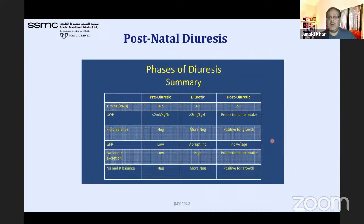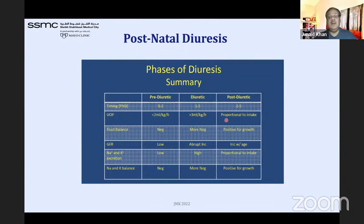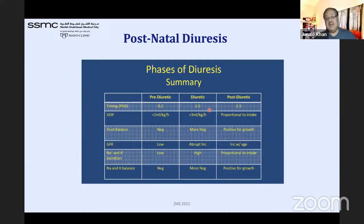The postnatal timing phases are: pre-diuretic phase at 0–2 days, diuretic phase at 1–5 days, and post-diuretic phase at 2–5 days. Urine output in the pre-diuretic phase should be less than 2 ml/kg/hour; in the diuretic phase, 3 ml/kg/hour; and post-diuretic, proportional to intake. Fluid balance is negative in the diuretic phase and positive for growth afterwards. GFR, sodium, potassium balance, and their excretion follow these phases.